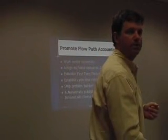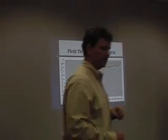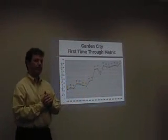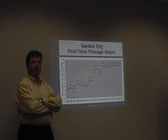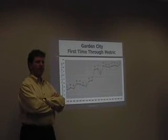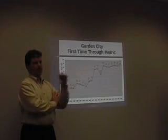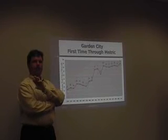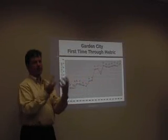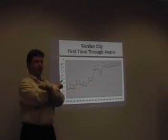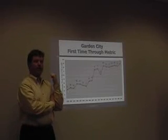We already talked a lot about what Alcoa did, and this was similar — to promote flow path accountability. After they started organizing by flow path, their first time through had been around 20 to 30 percent, which was lower than the industry average of around 60 to 70 percent — so they were pretty bad on this metric. By getting people assigned to flow paths, it became very obvious when someone upstream had caused the first pass quality to be less than perfect downstream, and you started to have a team cooperating across departments. This was also their biggest source of variability.